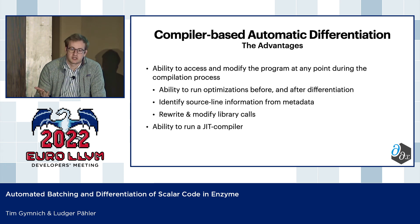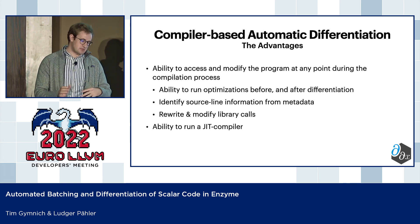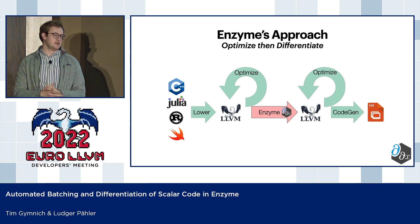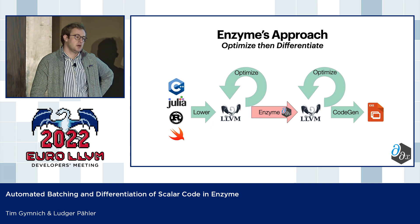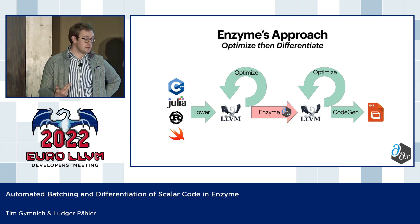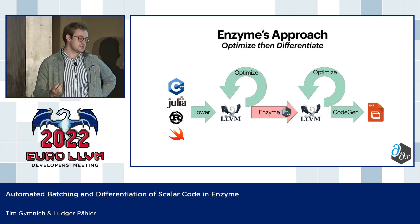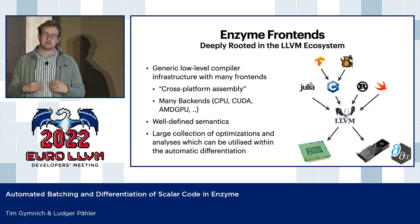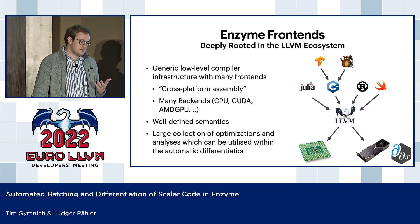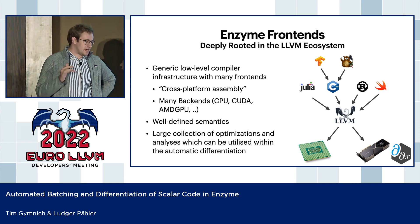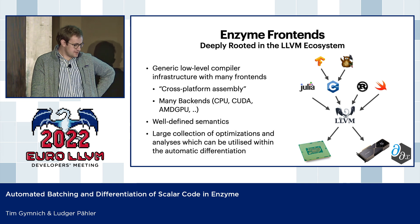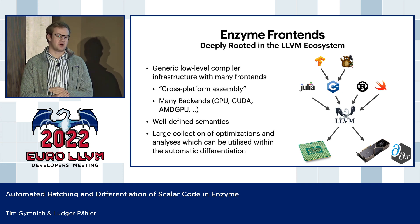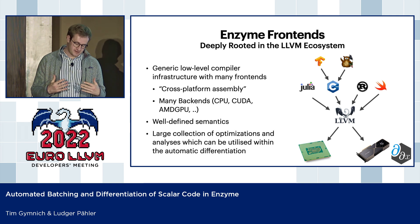Generally, we can basically run a JIT compiler, which is what happens in some of the ways Enzyme is exposed to a user. Any language going to LLVM IR can be differentiated with Enzyme. You first want to run your optimizations to have optimized LLVM code, then run Enzyme to synthesize your gradients, and then you can optimize it again and generate an executable. Enzyme is very deeply rooted in the LLVM ecosystem — we build on the compiler infrastructure and are able to target all the LLVM hardware targets, with well-defined semantics and compiler-based optimization passes.